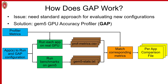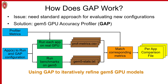The way GAP works is it takes in metrics we want to profile — for example, L2 hits or misses — and the applications we want to run on the real GPU and in GEM5, as well as the GEM5 configuration. GAP will then run each application on the real GPU and in GEM5, produce metrics from both, and generate a per-application comparison file, which we can use to iteratively refine the GPU model by identifying which metrics are significantly divergent.